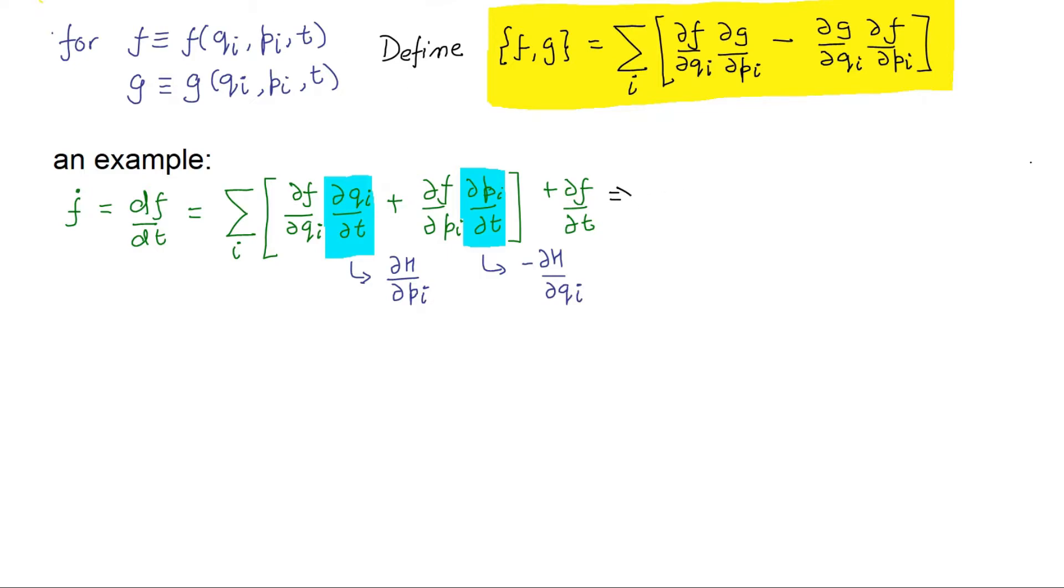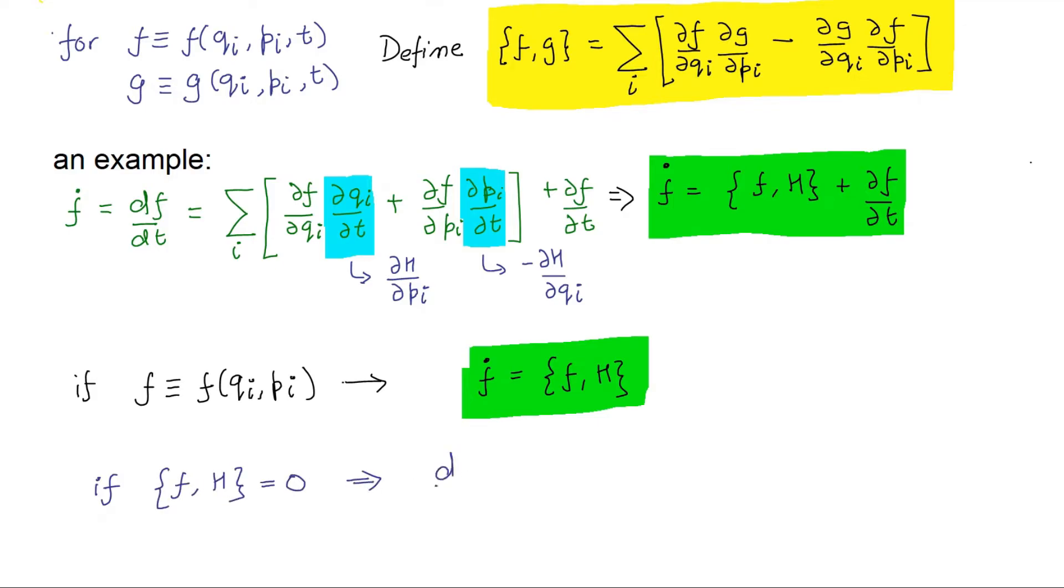we find that the first quantity is a Poisson bracket of F and H. We have thus arrived at an equation of motion of the quantity F. Quite often we will come across quantities which do not have explicit time dependence and only evolve in time through Q and P. In such a case the partial time derivative vanishes. We also notice that if the Poisson bracket of a quantity with the Hamiltonian is zero, then the value of such a quantity does not change with time and hence it is called a conserved quantity or a constant of motion.